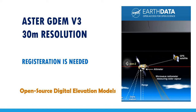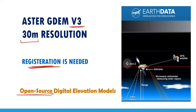Hello everybody and welcome to this new video. In today's video I'm going to explain how to download ASTER Global DEM, which is digital elevation model, the third version with a resolution of 30 meters. We are going to download the data from the NASA website using the EarthData service. You need first to register on the website so that you would be able to download the data for free, because it is open source data.